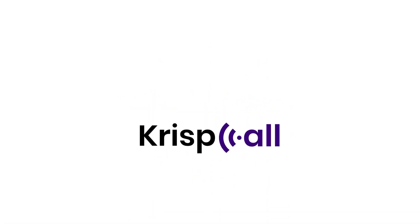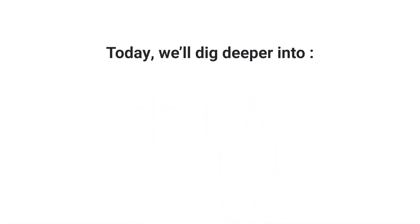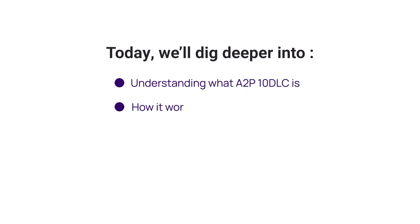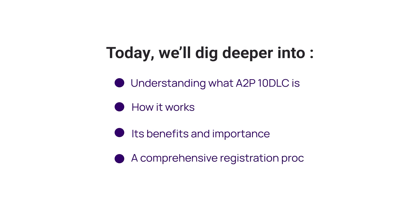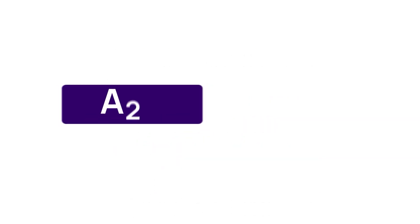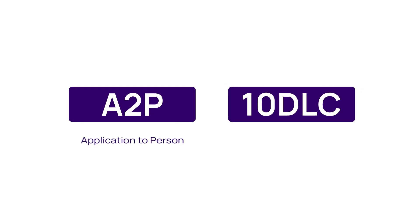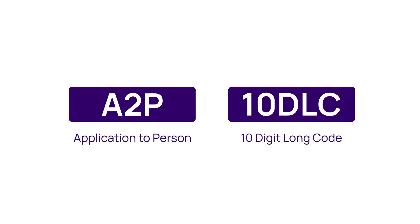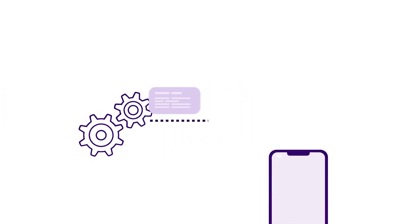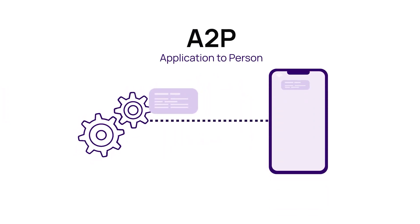Welcome to Crisp Call. Today we'll dig deeper into understanding what A2P 10DLC is, how it works, its benefits and importance, and a comprehensive registration process. A2P 10DLC stands for Application to Person and 10 Digit Long Code. It's a messaging framework set by US telecom carriers enabling businesses to send A2P messages to their US-based clients.